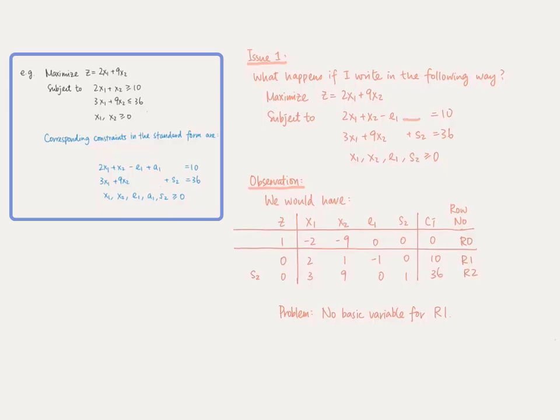Because of this issue, we would like to add an artificial variable to the constraint whenever we have the greater than or equal to symbol. As a remark, a similar reason applies to constraints with an equation sign as well. We will also add an artificial variable to constraints with an equation sign.